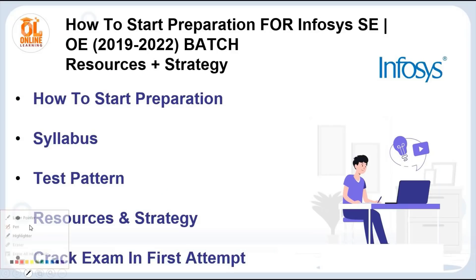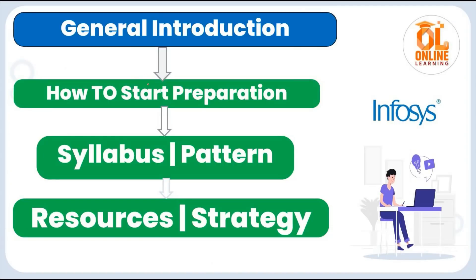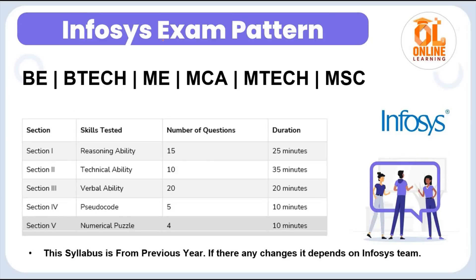I made a PPT for all of you that will be very helpful in your preparation. SE hiring means Systems Engineer hiring, and OE hiring means Operation Executive. SE hiring is for B.Tech, M.Tech, MCA, and M.Sc courses. Operation Executive hiring is for BCA, B.Sc, and Diploma. In this video I will cover how to start preparation, syllabus, test pattern, resources, strategy, and how to crack the exam in the first attempt.